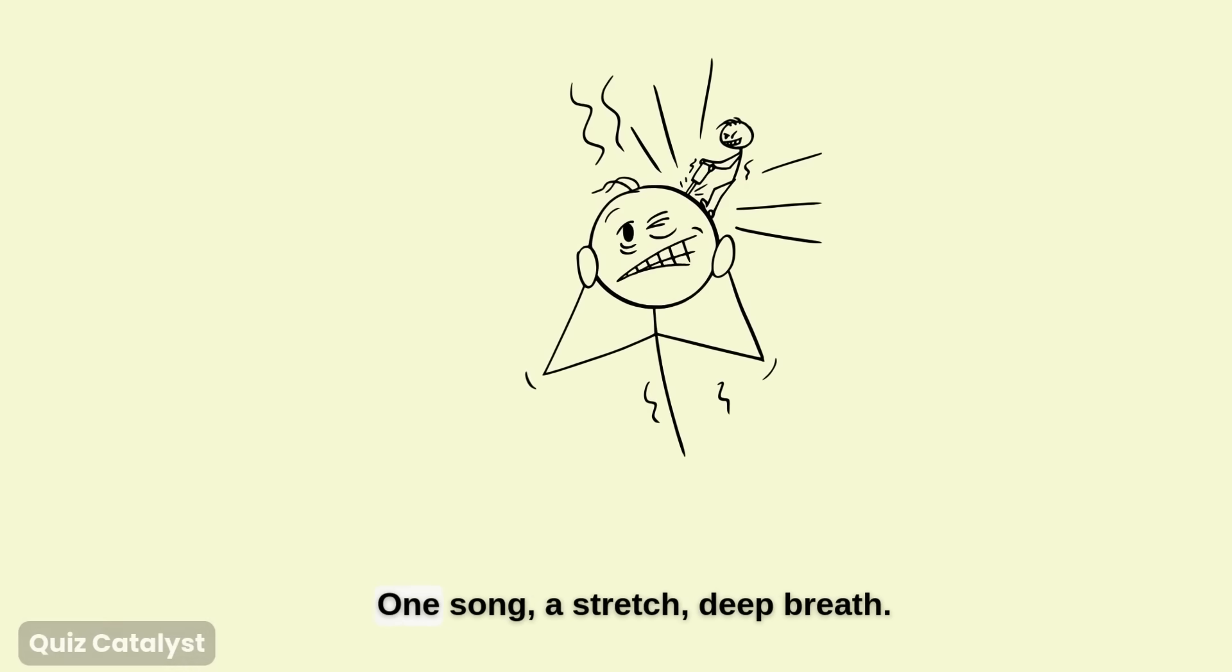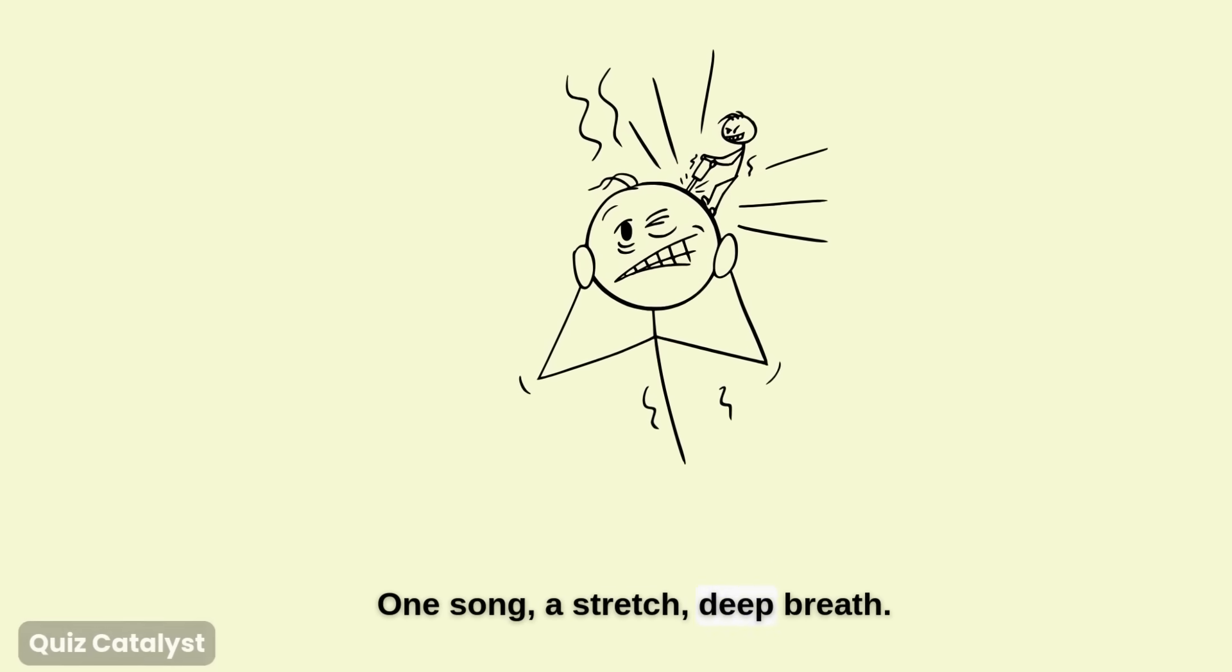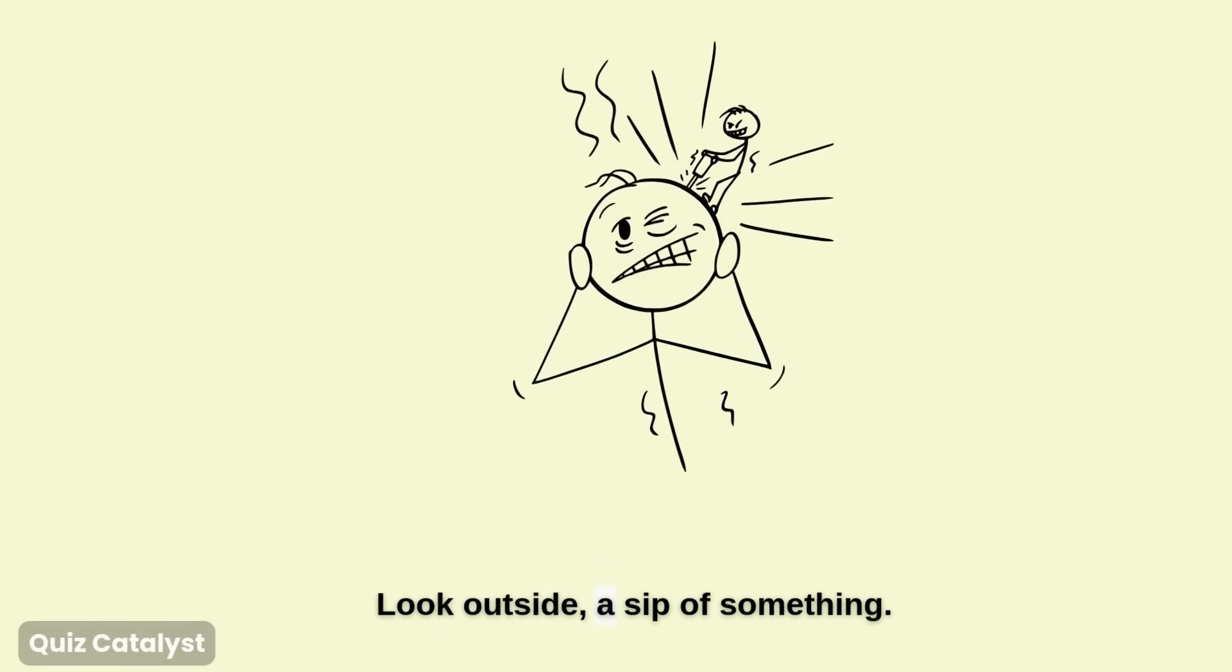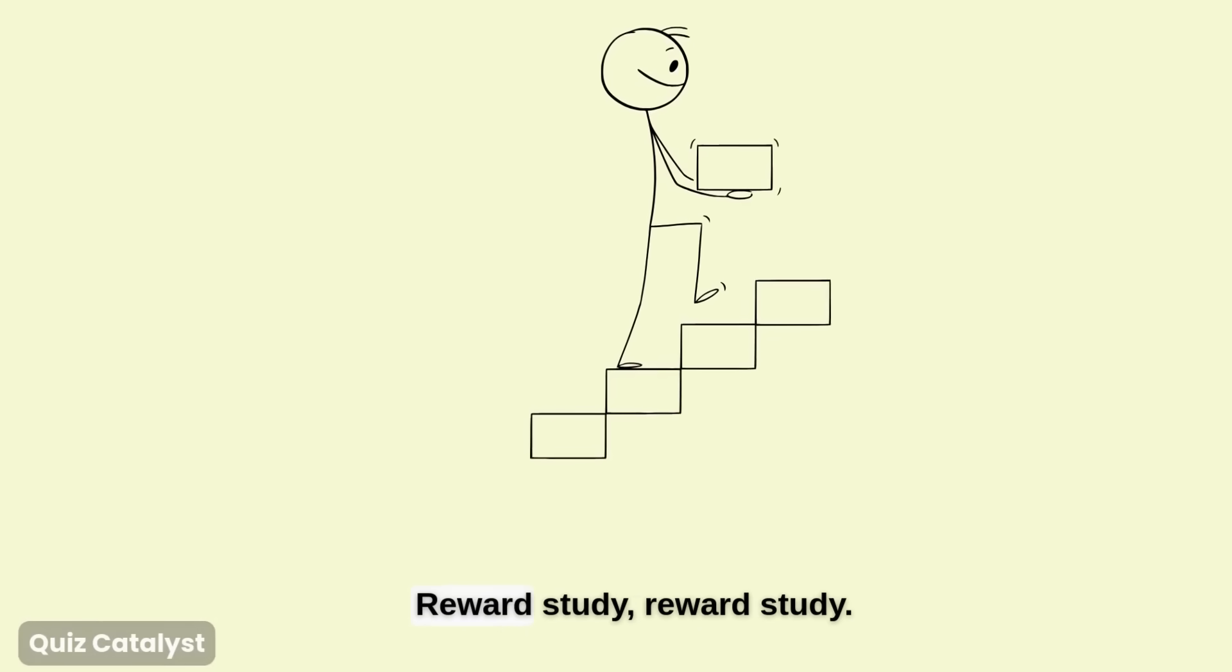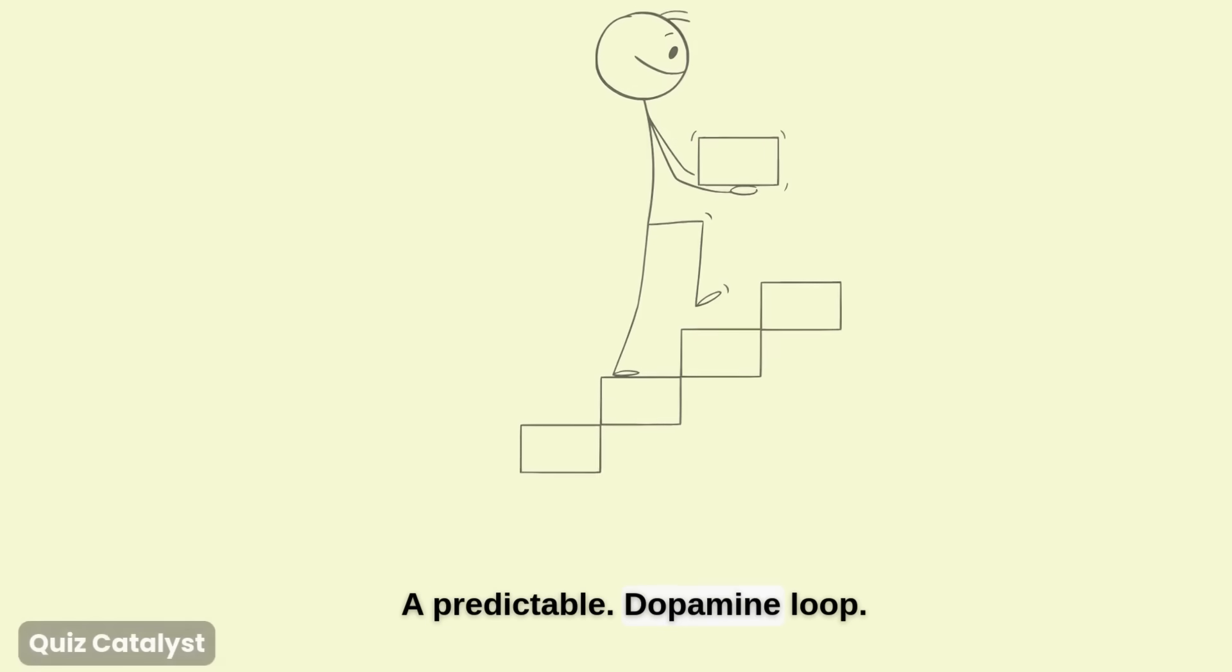The reward must stay small. One song. A stretch. Deep breath. Look outside. A sip of something. 30 seconds phone if you have control. Reward study. Reward study. A predictable dopamine loop.